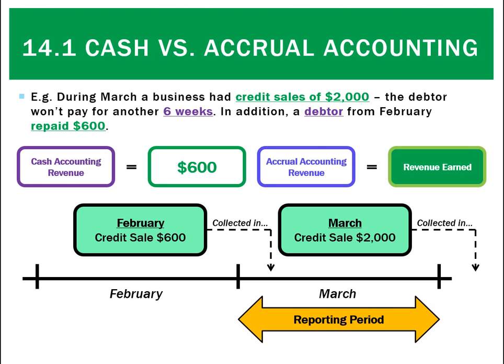Under accrual accounting though, we're going to say the revenue earned is $2,000 — just the credit sales for this month. It doesn't matter that they haven't been received; we still include them. Likewise, February's credit sale, even though we receive the money during March, we don't count it as revenue because it hasn't been earned in March.